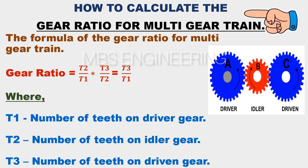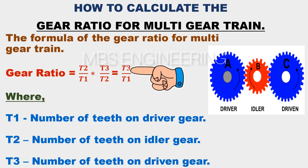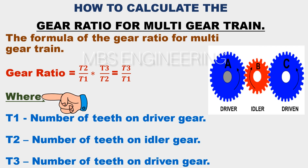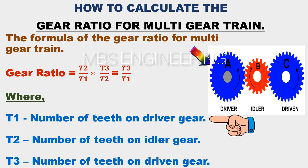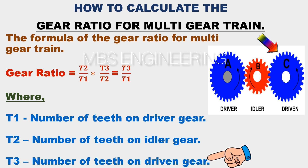How to calculate the gear ratio for a multi-gear train. The formula for the gear ratio is: Gear ratio equals T2 divided by T1, and that obtained value multiplied by T3 divided by T2. So the gear ratio equals T3 divided by T1, where T1 is the number of teeth on the driver gear, T2 is the number of teeth on the idler gear, and T3 is the number of teeth on the driven gear.